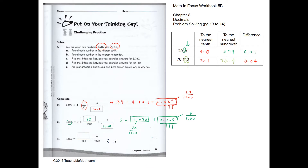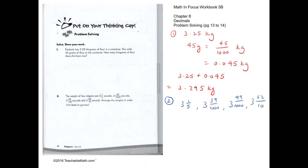3.157 equals something over 1000 plus 0 plus 7 over 1000 (the thousandths part is 0.007), so the numerator over 1000 will be 3150. So 3.157 equals 3150 over 1000.